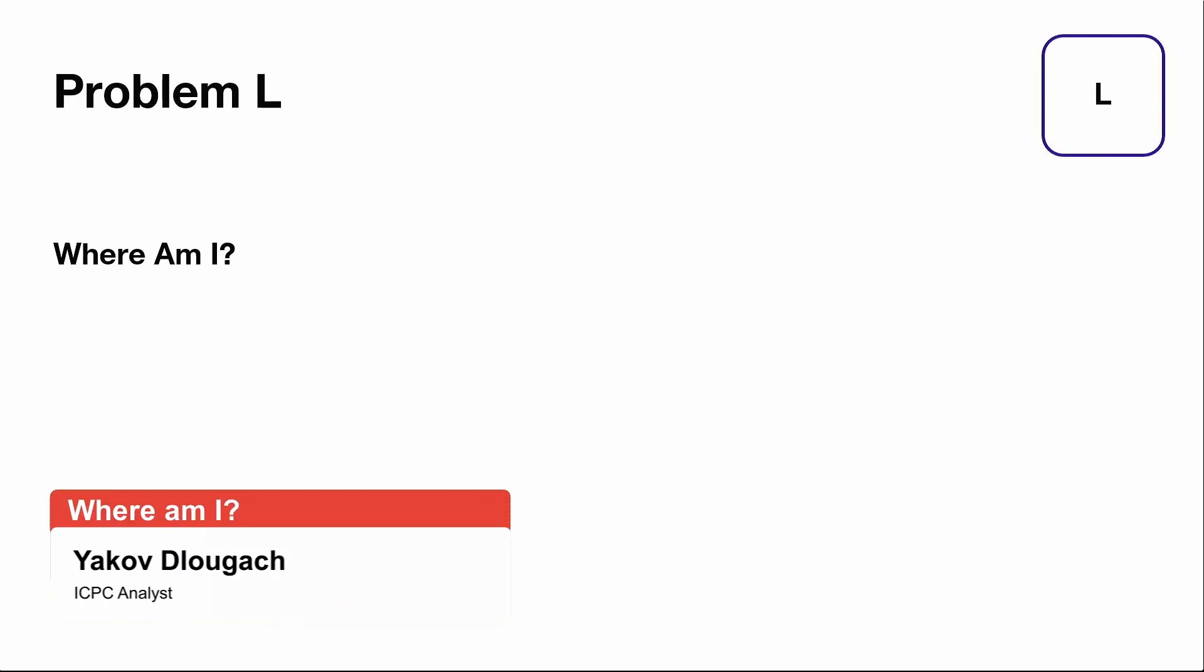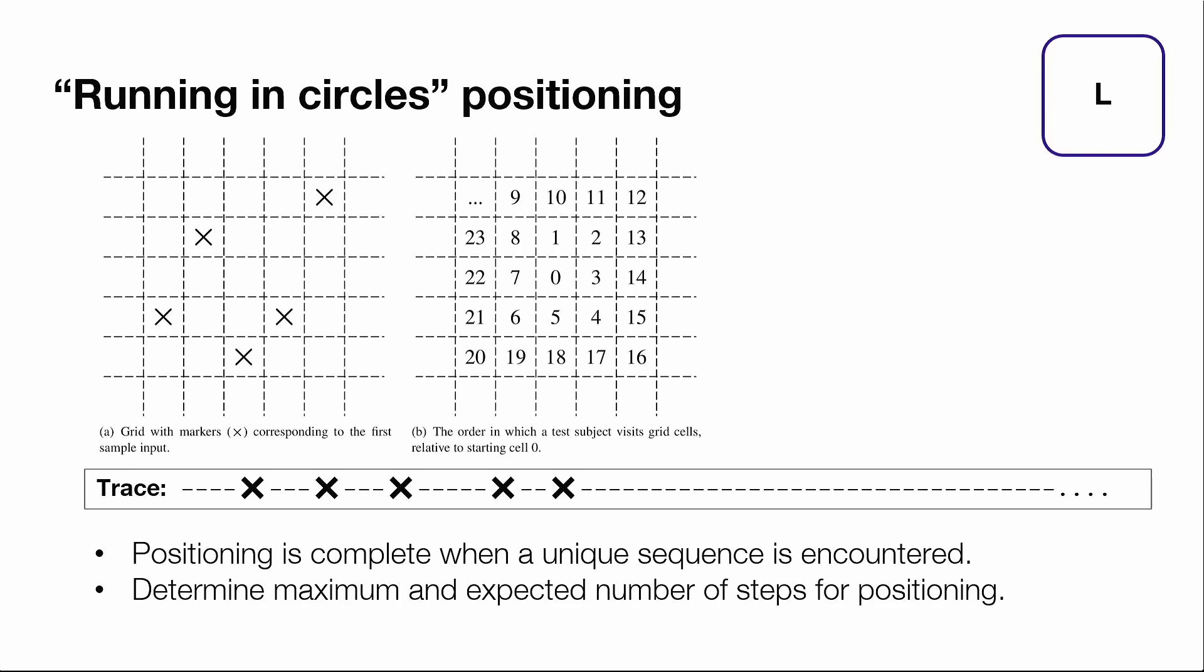Problem L is one of the easier problems in this contest. It's called Where Am I. The idea of the problem is that we're given a part of an infinite grid where some crosses are placed on part of the cells.